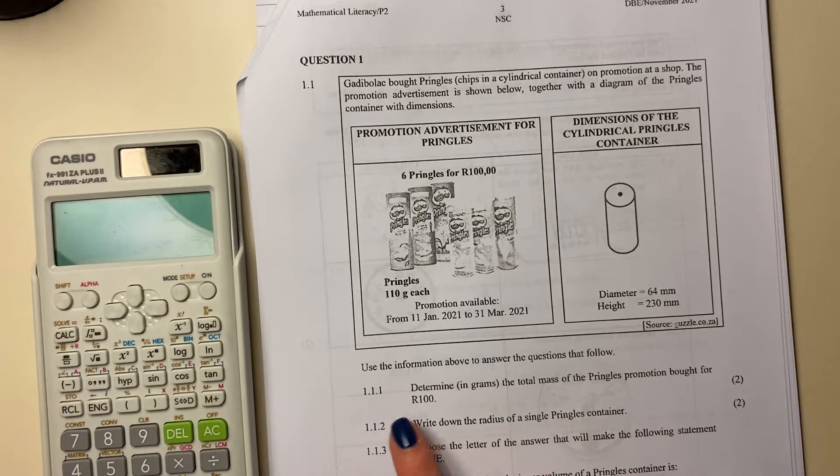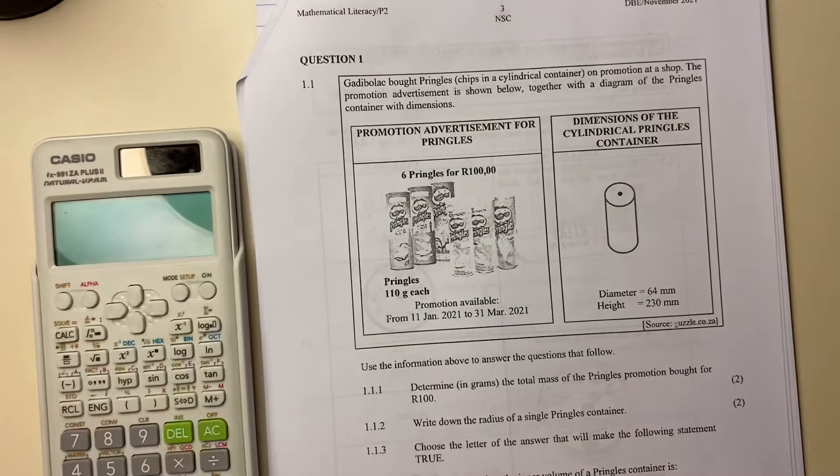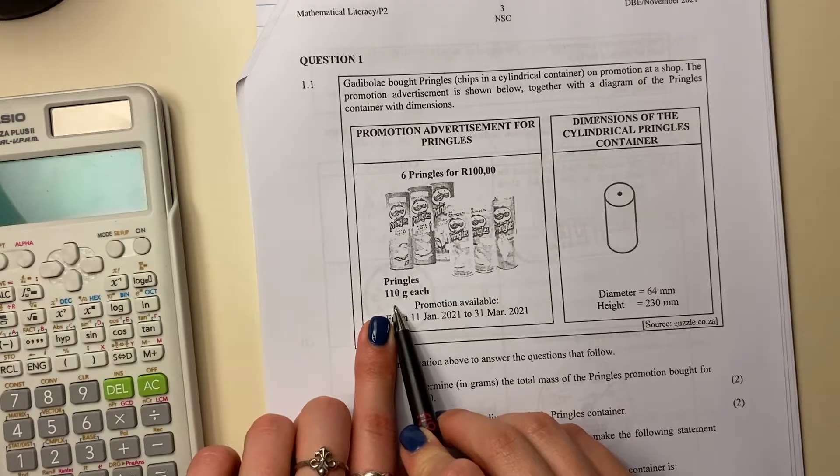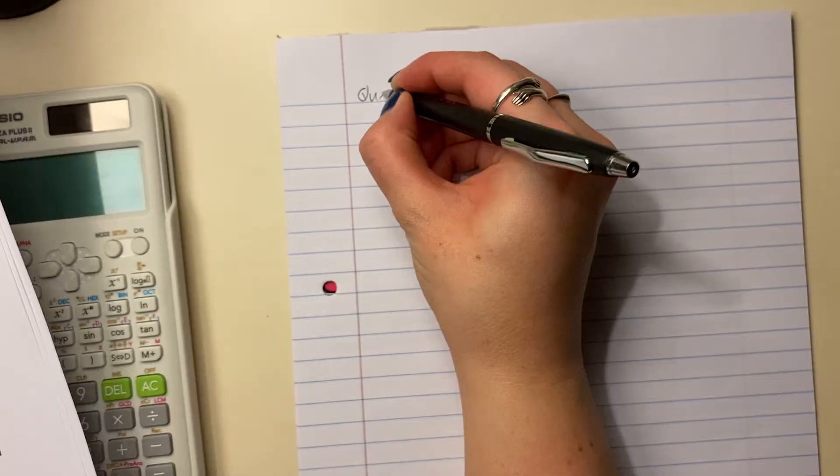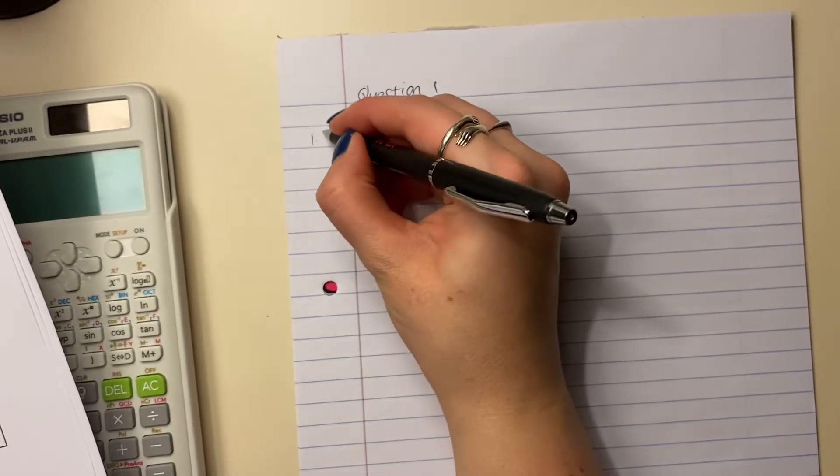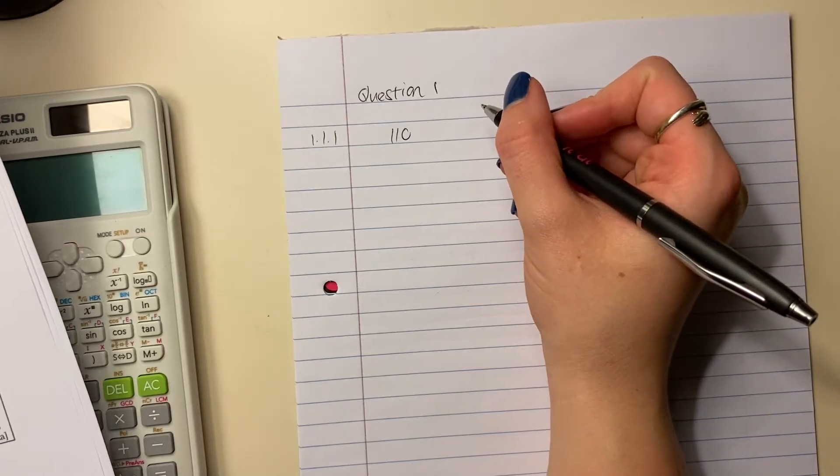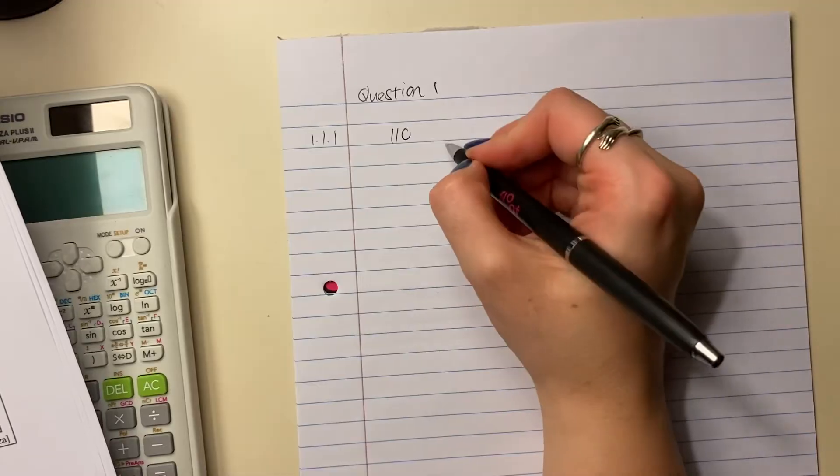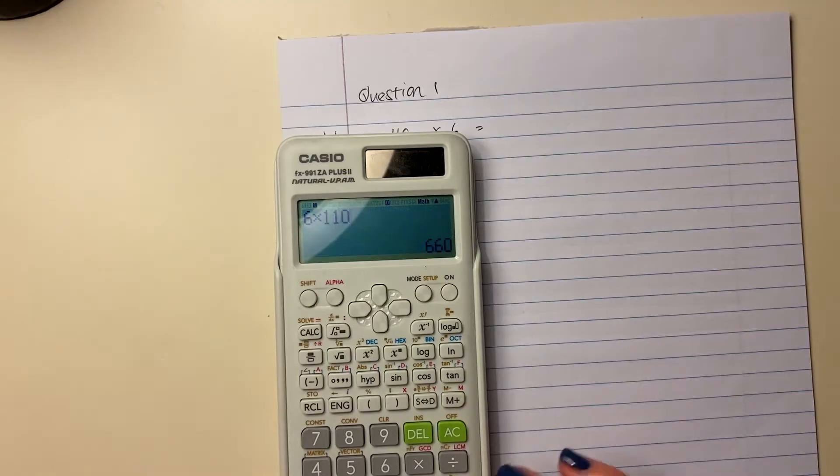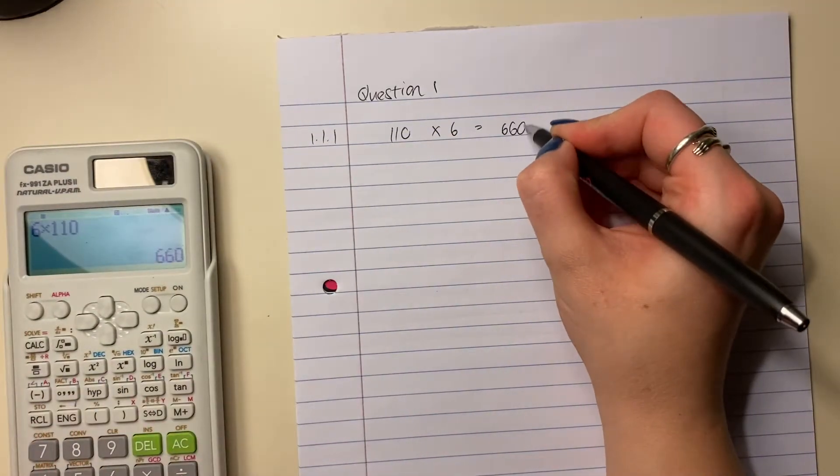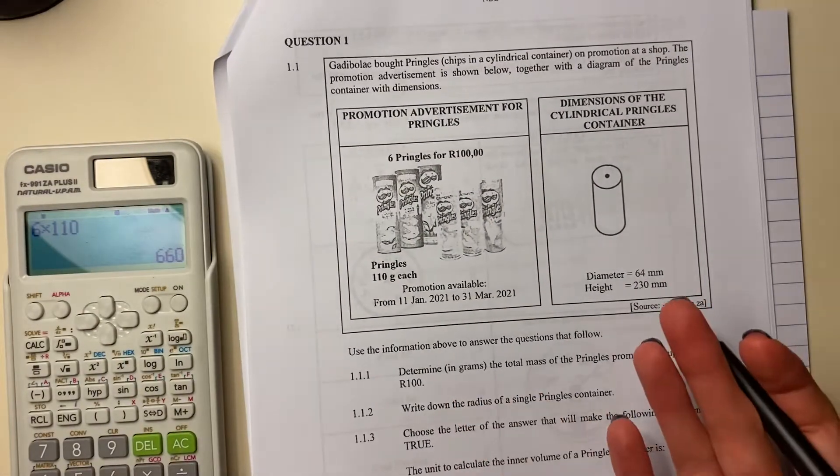So then it says use the information above to answer the questions that follow. So 1.1.1 says determine in grams the total mass of the Pringles promotion bought for a hundred rand. So basically it's saying if one of them is 110, how much is six of them? So remember here, I said always label well. So 1.1.1, so one of the Pringles containers is 110, so you times it by six. You can do that in your head. You should be able to do that in your head. But if you can't, there's your calculator. So it's 660, and make sure you put in the grams. You have to put in your units of measurement, otherwise you can be penalized.